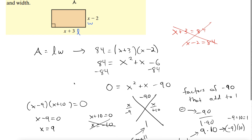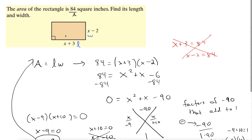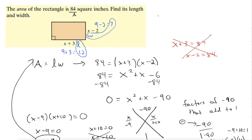So x equals 9. Going back to the original problem, we want to keep length and width positive — that's why we tossed out the negative 10. Plugging in 9: for length we have 9 plus 3 equals 12 inches. And we have 9 minus 2 which is 7 inches — that's our width. So length equals 12 inches and width equals 7 inches.